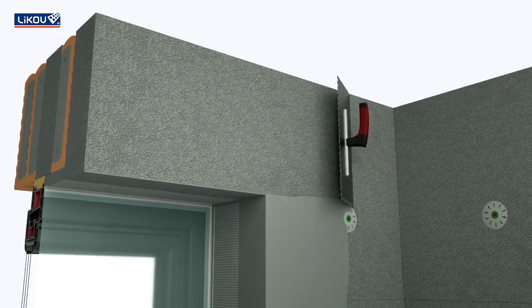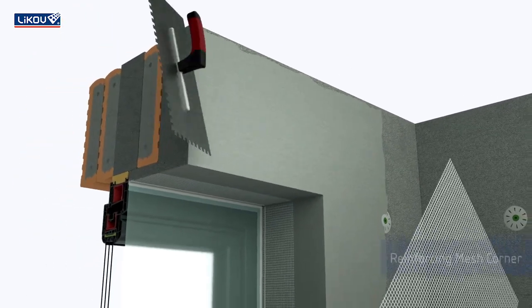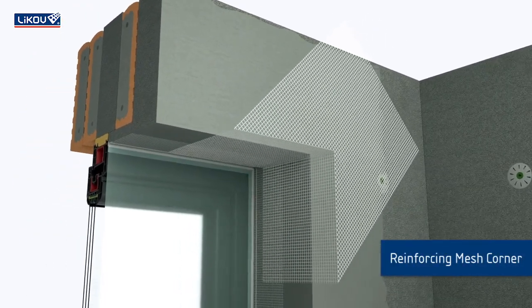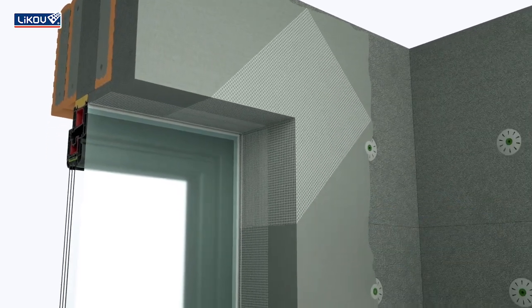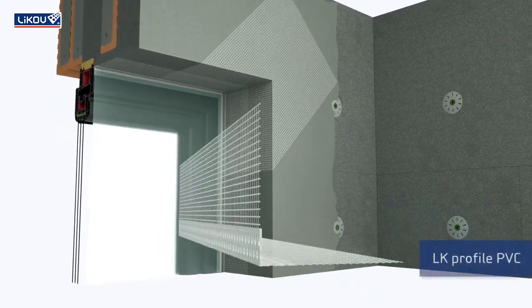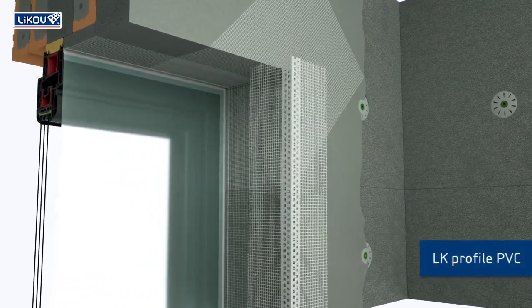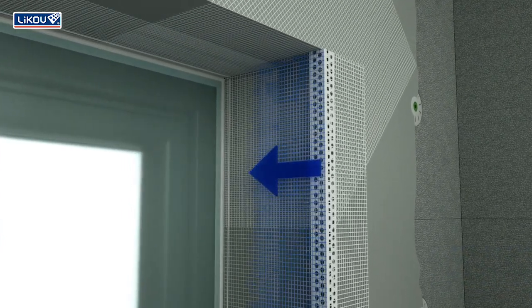Before their installation, we can use reinforcing corner mesh for the reinforcement of the reveal corner. Corner bead LK can be provided with a wider mesh strip to cover the whole reveal.